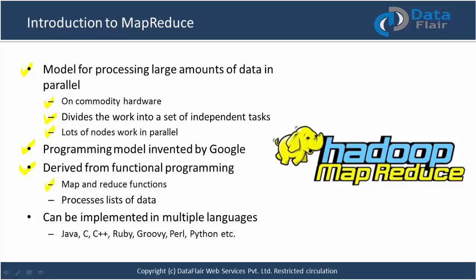This functional programming actually processes lists of data — data is arranged in the form of a list or given as input in the form of a list. MapReduce can be implemented in multiple languages. Java is the language in which Hadoop is developed and is the recommended language, but you can also develop MapReduce code in C, C++, Ruby, Groovy, Perl, Python, and more.